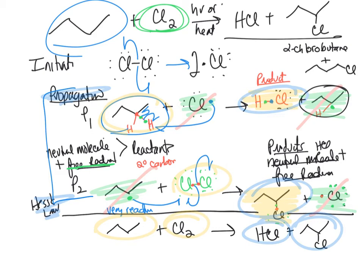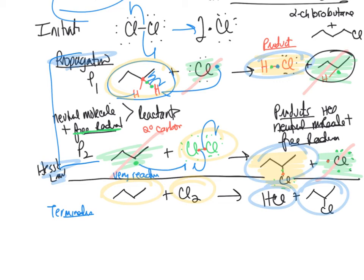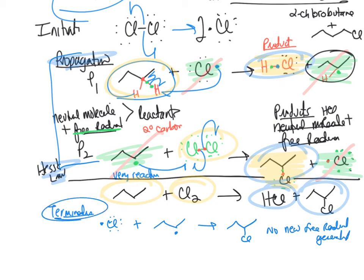How does the termination step happen? You can pick any free radical that might be generated. For example, a chlorine free radical combining with the carbon free radical — no new free radical is generated, and that's a termination step. Or two radicals of the same type could bump into each other. There are several possible termination steps.